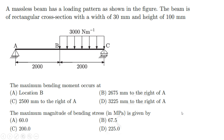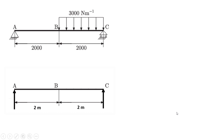At A and C there will be reactions Ra and Rc. The UDL is 3000 Newton per meter, acting over the length BC. The length is given as 2000 mm, which we convert to 2 meters. Similarly, the distance from A to B is also 2000 mm, converted to 2 meters.